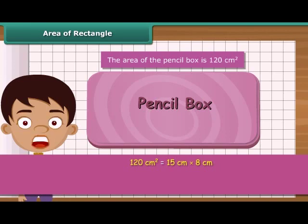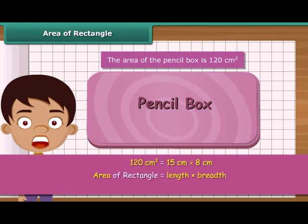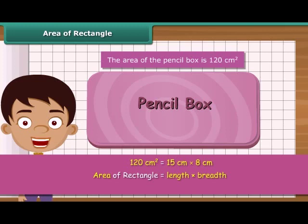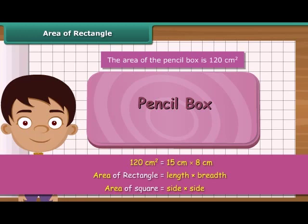So we can generalize that the area of any rectangle is obtained by multiplying its length and breadth. Since a square is a rectangle whose length and breadth are equal, the area of a square is obtained by multiplying its side by its side.